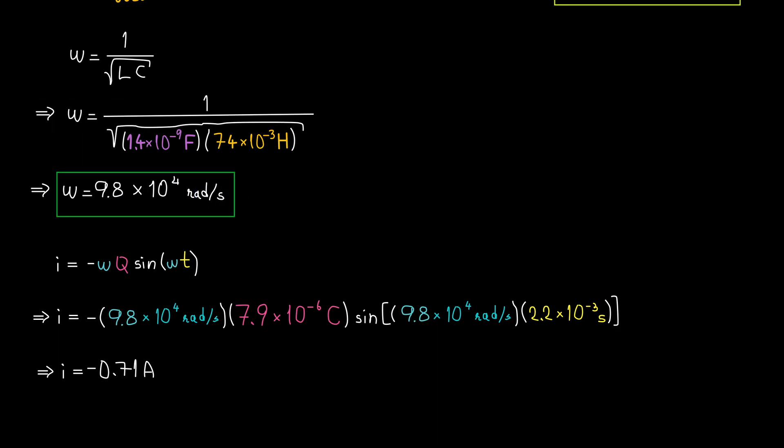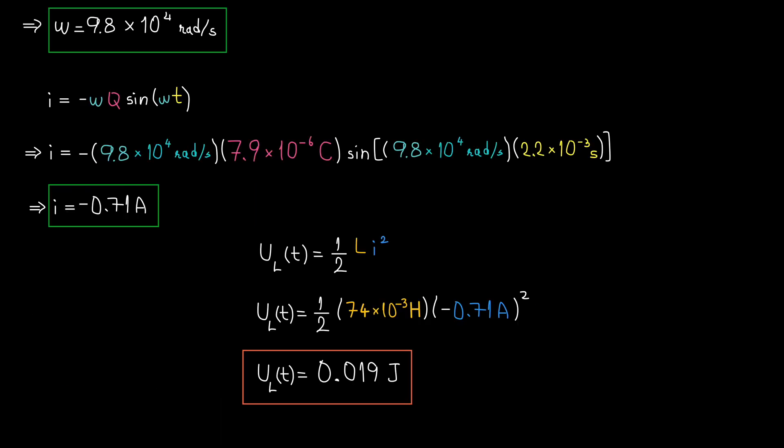The formula for the current is negative omega Q times sine omega T. When we plug in the numbers, we get negative 0.71 amps for the current at T equals 2.2 milliseconds.